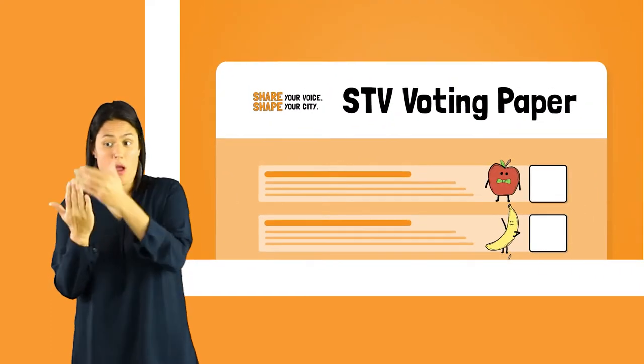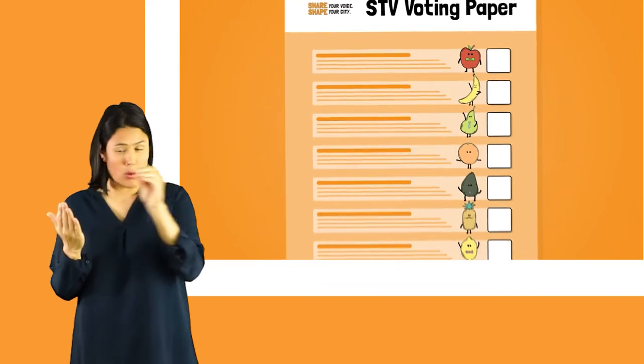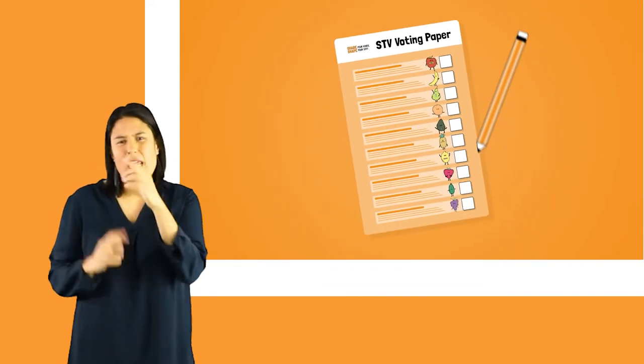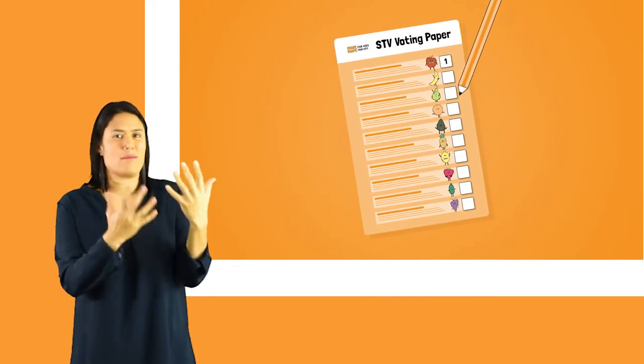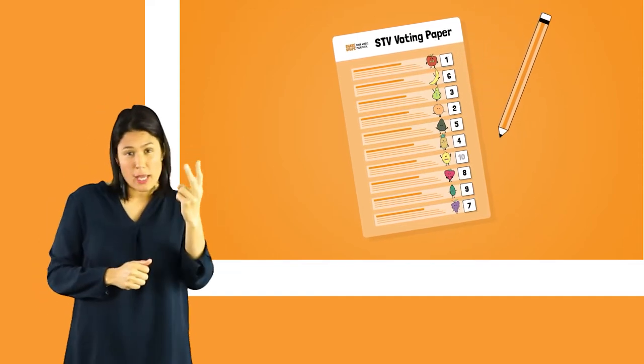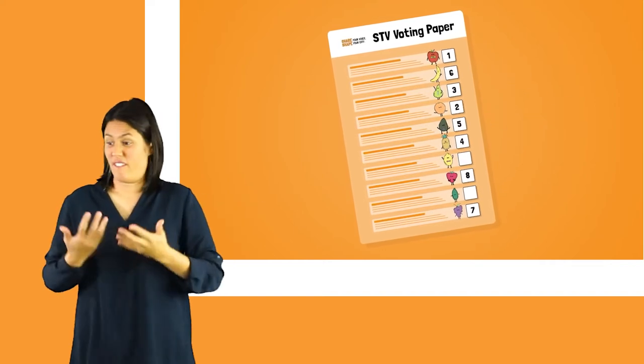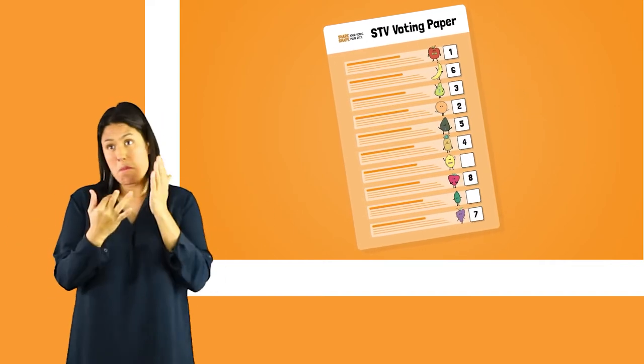On an STV voting paper, you rank the candidates in order of your preference. Let's say there are ten candidates in your ward. You choose apple as your favourite, orange as your second choice, pear as your third, and so on. You can rank as many candidates as you wish. You don't need to rank them all. The votes are then counted in stages.